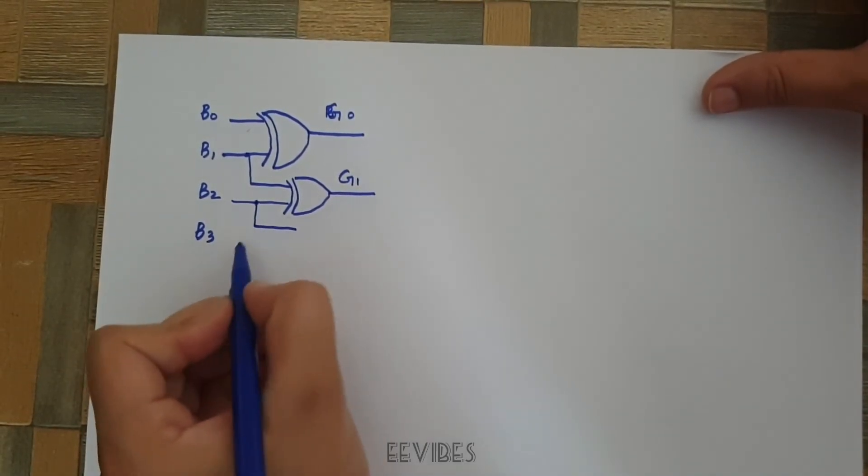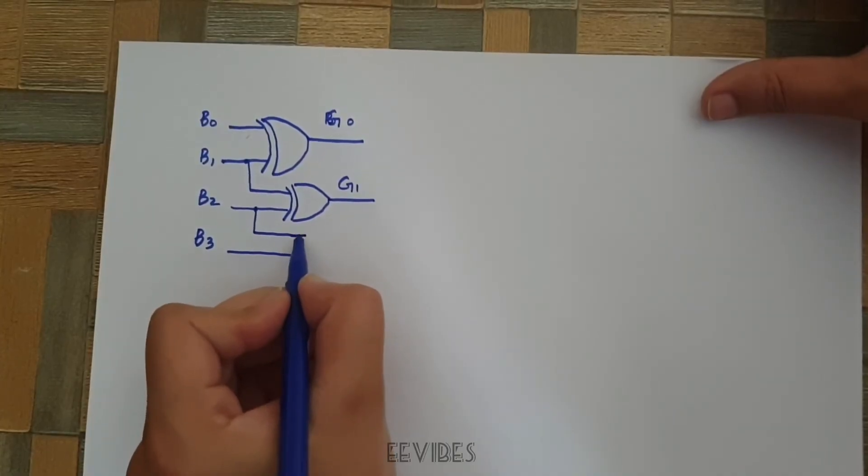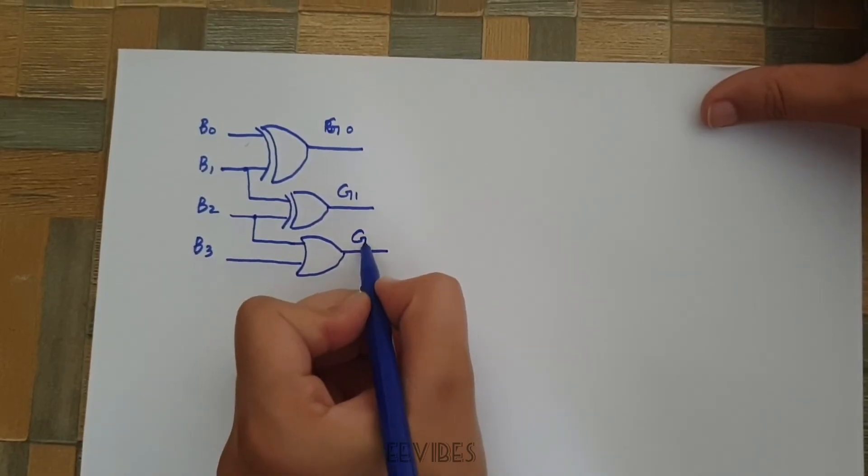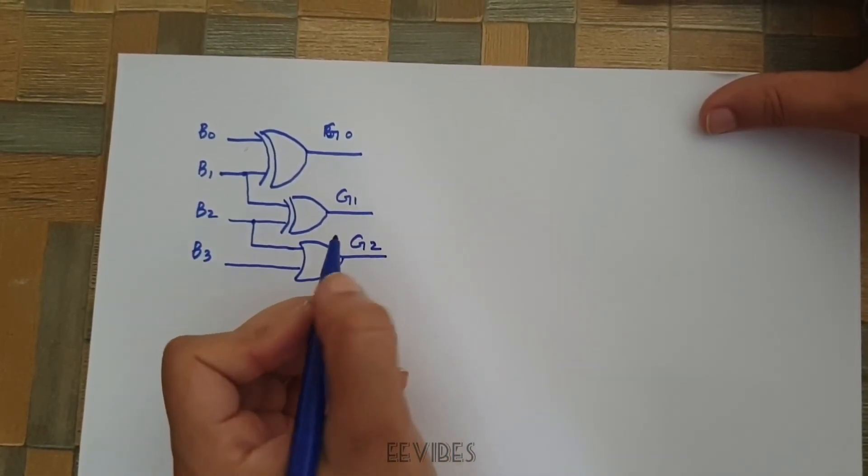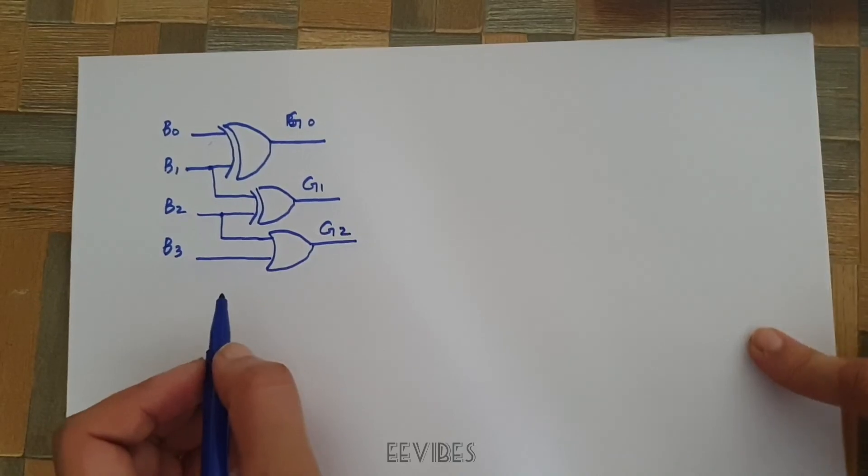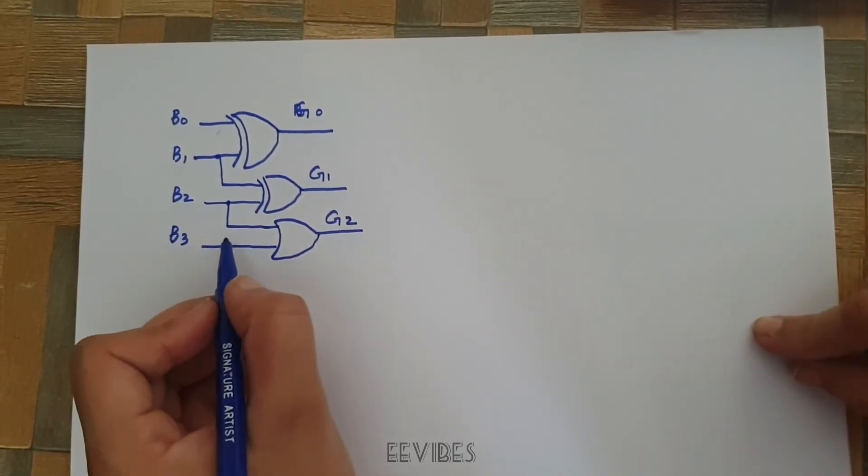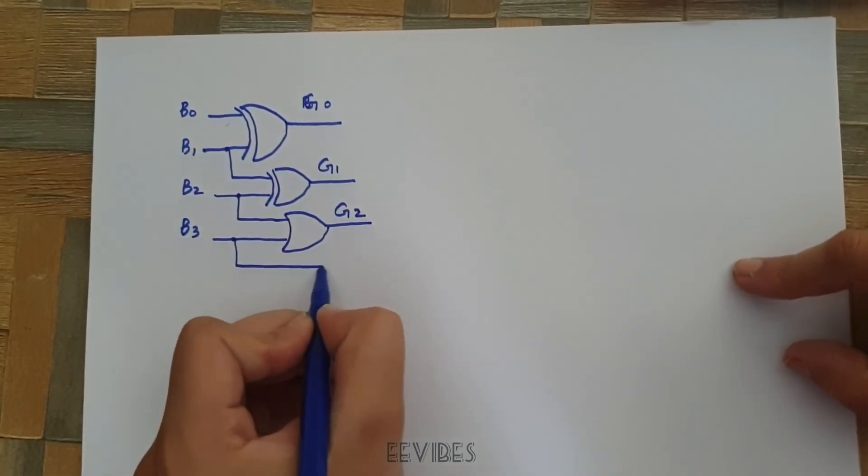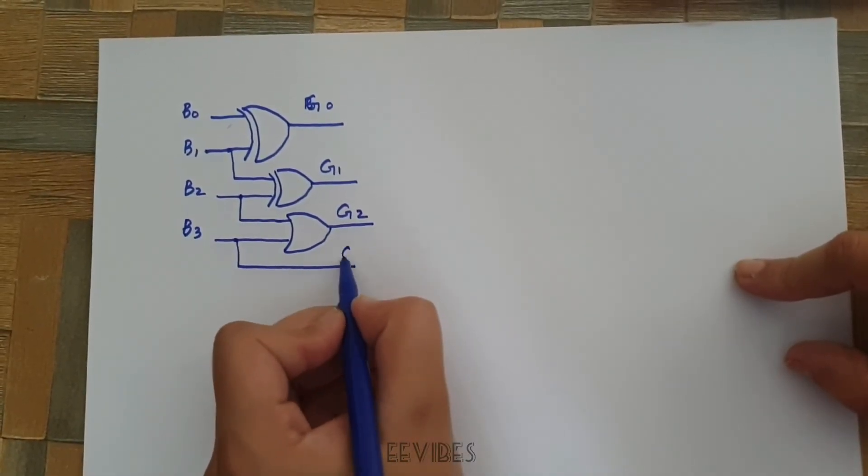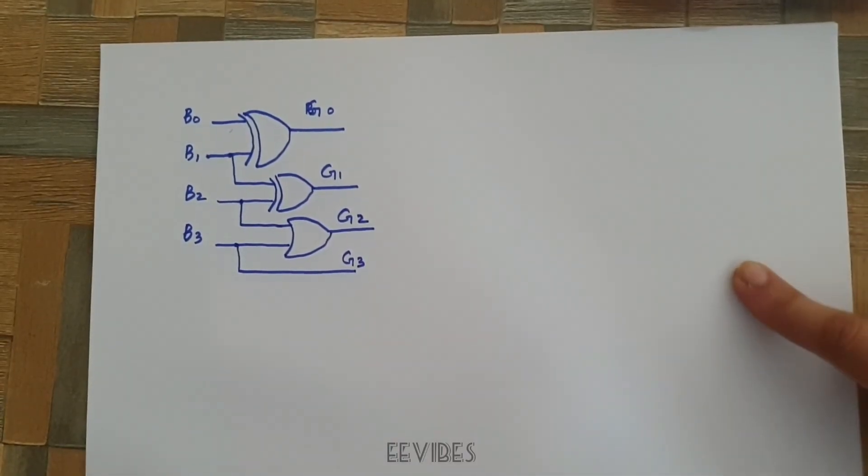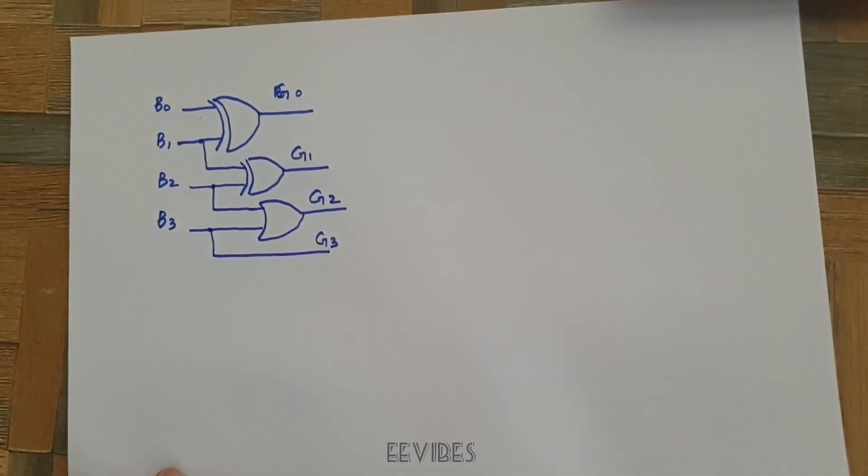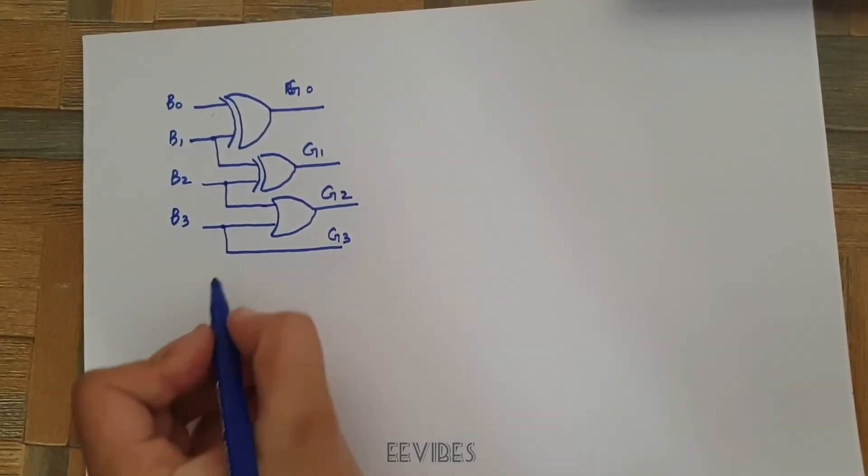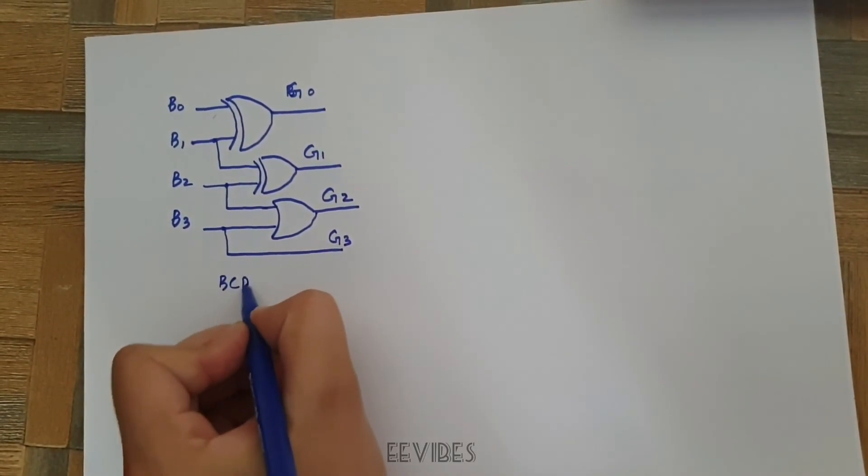And then the next step is to generate G2. So, G2 is generated by the OR operation of B2 and B3. So, let's just OR the B2 and B3 for obtaining G2, the second bit of the Gray code. And the last but not the least, G3 is actually equal to B3. So, simply you can get the fourth bit of the Gray code which is actually the G3. In this way you can implement this BCD to Gray code converter.